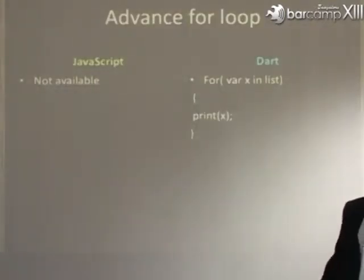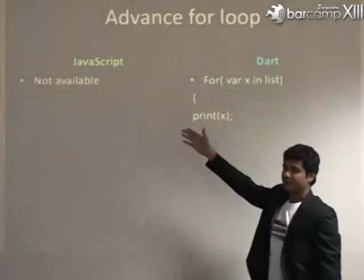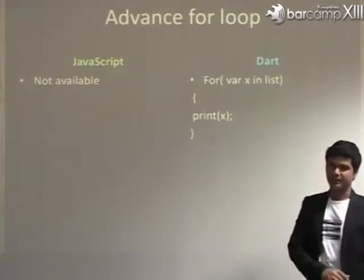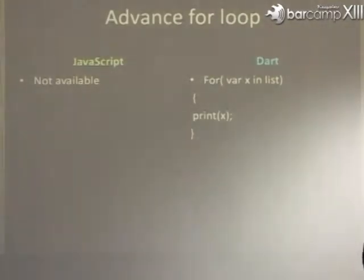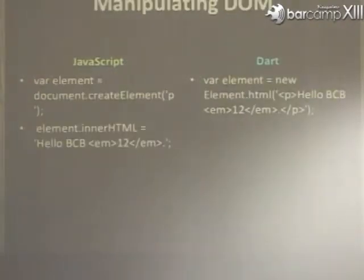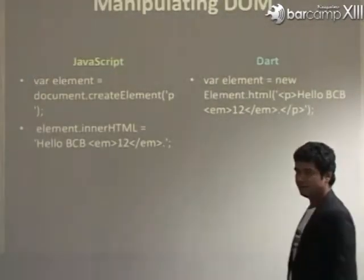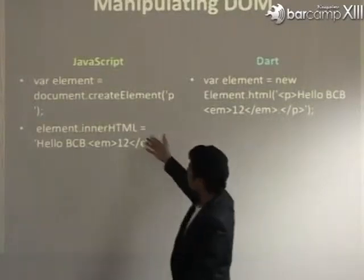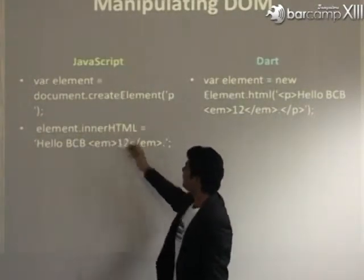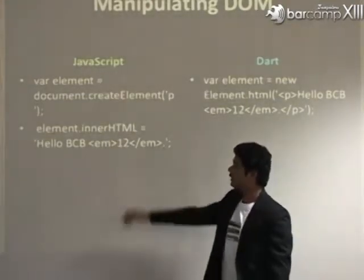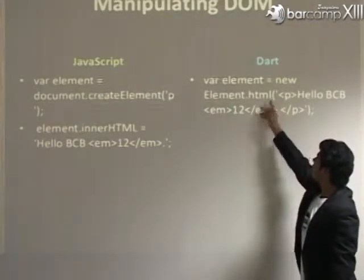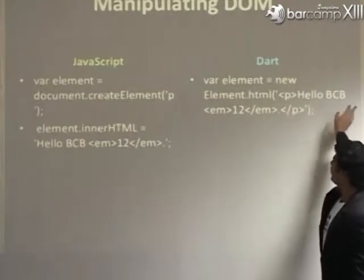The advanced for loop is also available in Dart, like in C# and C++. For iterating, instead of manual iteration, if you know the type you can use this advanced for loop. For DOM manipulation — in JavaScript you write document.createElement, then use innerHTML to manipulate. But in Dart, simply use the new keyword with Element.html, and you can directly manipulate your DOM.